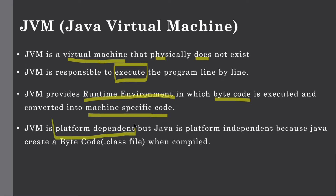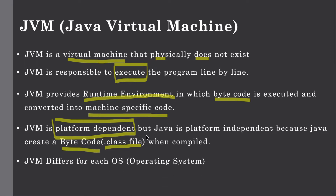JVM is platform dependent, but Java is platform independent. When you compile a Java program, it creates a .class file which has the bytecode in it, so bytecode is platform independent. The function of JVM is to execute the program line by line and convert the compiled bytecode — compiled using the compiler present in JDK — into machine-specific code.